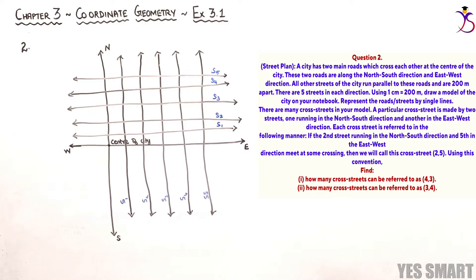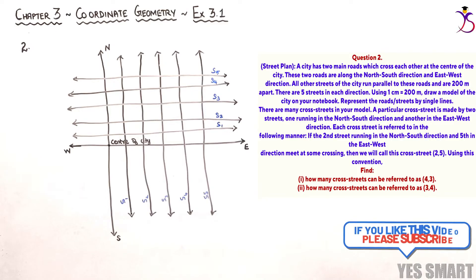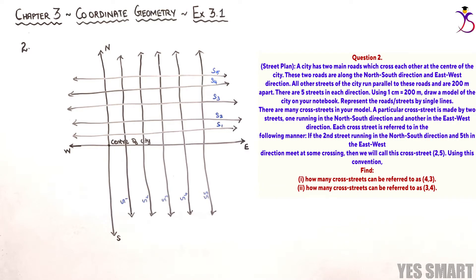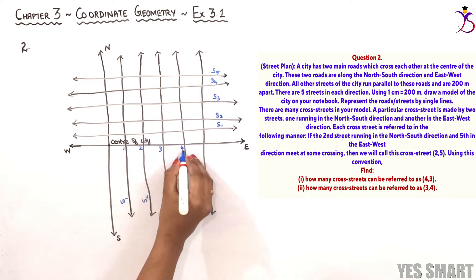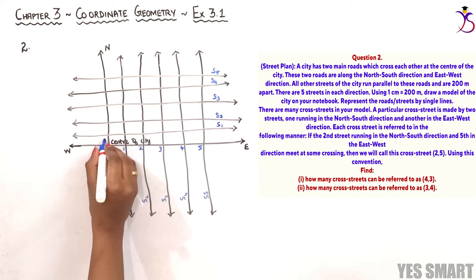We have to take a measurement of one centimeter distance between each street, because the scale is one centimeter equal to 200 meters and two streets are 200 meters apart. We will draw the five streets in each direction one centimeter apart, representing the roads by single lines. Let's mark the distances from the main street: one centimeter, two centimeters, three, four, five — and the same in the other direction.